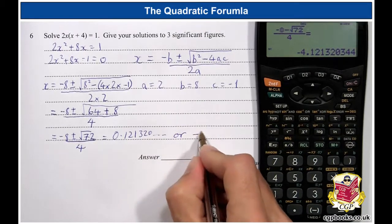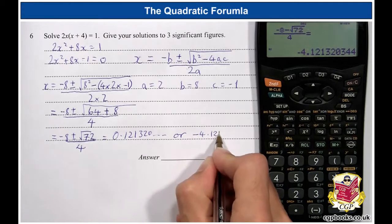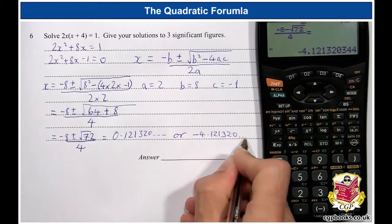So, it's or minus 4.1, 2, 1, 3, 2, 0, blah, blah, blah, blah, blah.